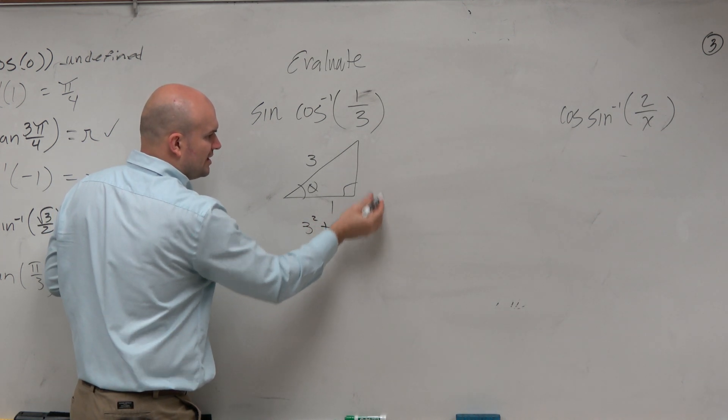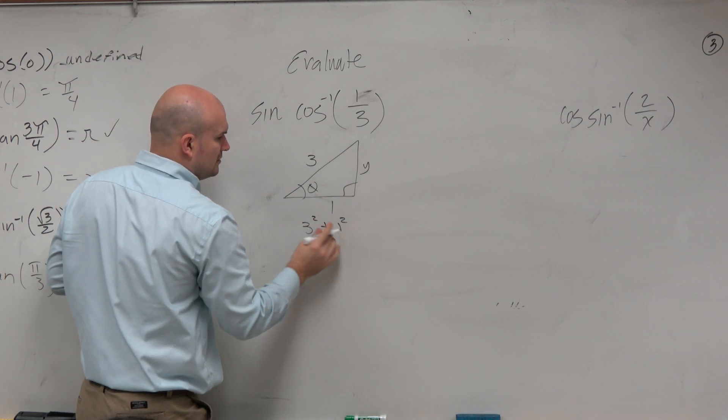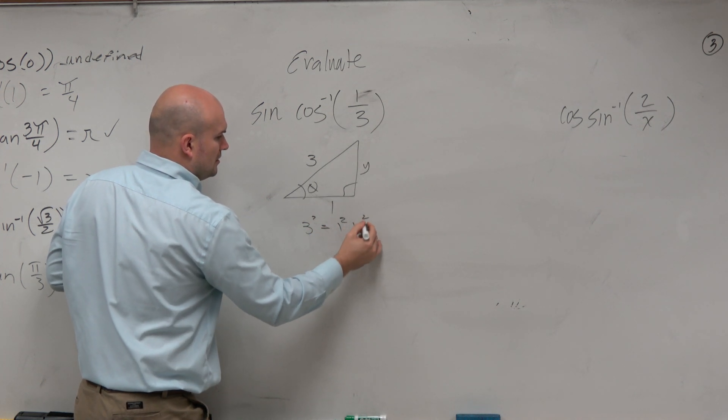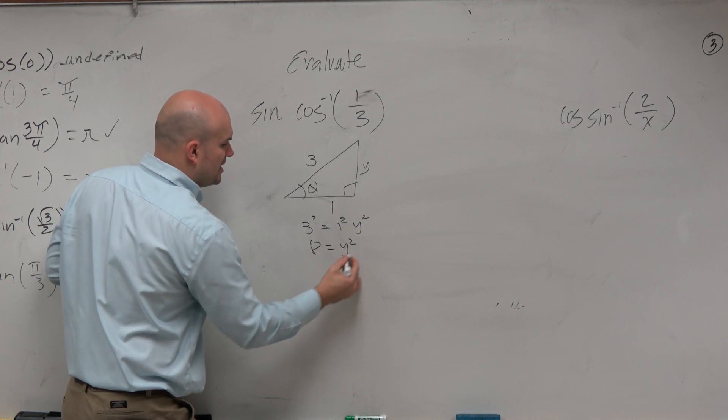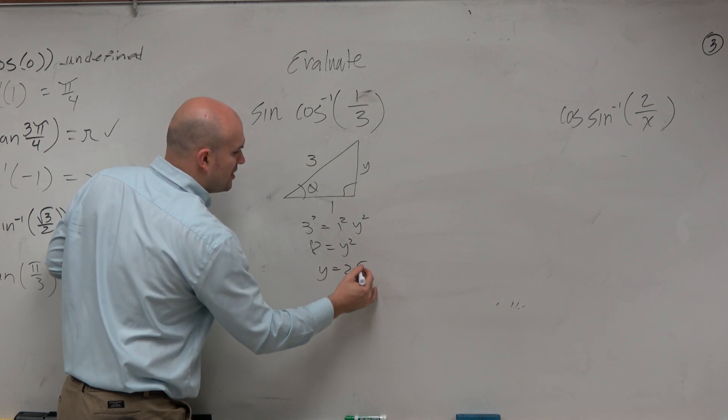3 squared plus 1 squared, and let's just call this y, equals y squared. So therefore, this is 8 equals y squared. y is equal to 2 square root of 2.